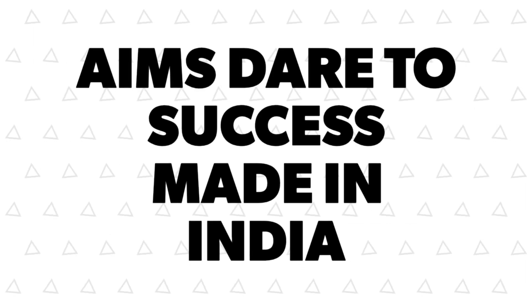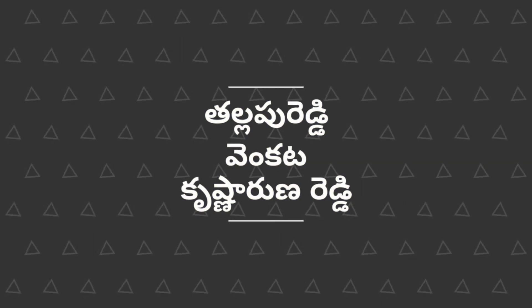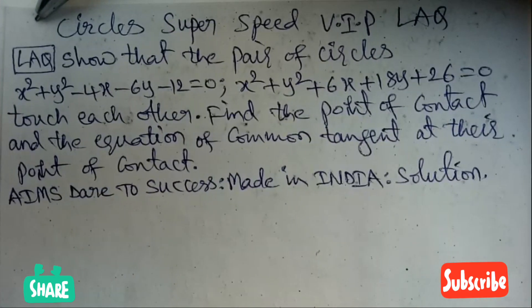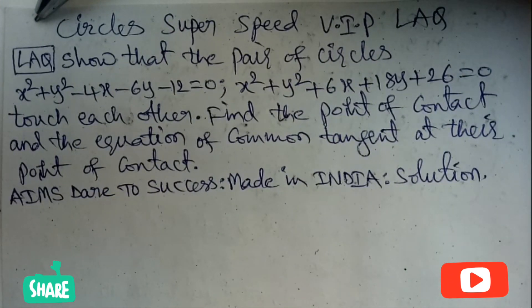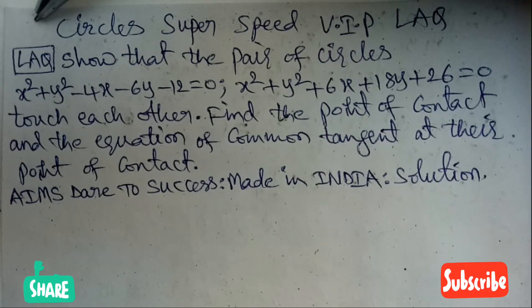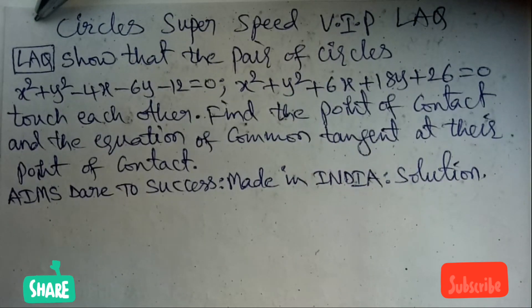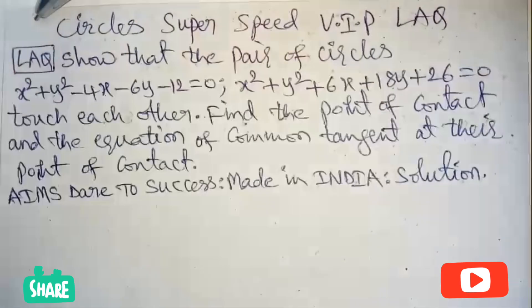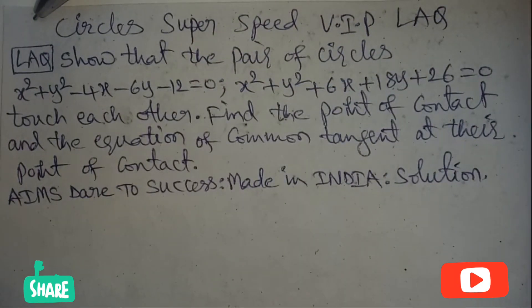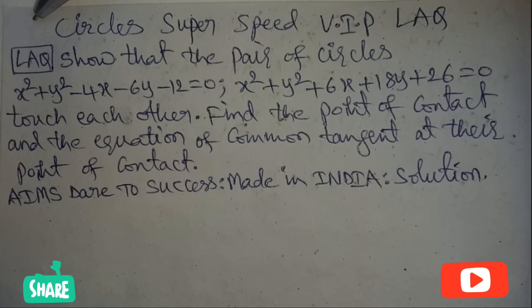Hi, hello, namaste. Welcome to Aims Dare to Success YouTube channel. Today I wanted to discuss with you circles — a very important previous long answer question. Show that the pair of circles x² + y² - 4x - 6y - 12 = 0 and x² + y² + 6x + 18y + 26 = 0 touch each other. Find the point of contact and the equation of the common tangent at the point of contact.